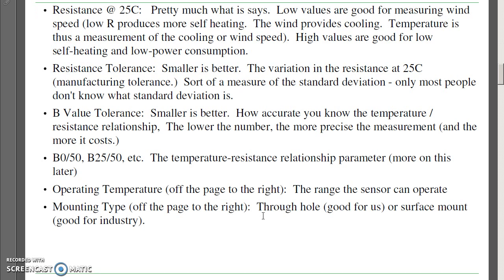What those parameters tell you is such: the resistance at 25°C is pretty much what it says. Low values of resistance are nice for measuring wind speed, that builds a hot wire anemometer. High values are nice because you have less self-heating. We're going to choose a 1K resistor, just because 1K is a nice number. The tolerance is how much variation you have between different resistors. Smaller is better.